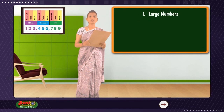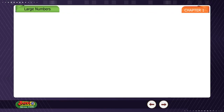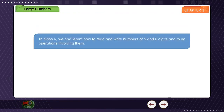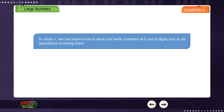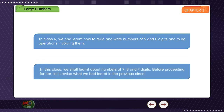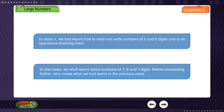In this chapter, you will learn about large numbers. Chapter 1: Large Numbers. In class 4, we had learnt how to read and write numbers of 5 and 6 digits and to do operations involving them. In this class, we shall learn about numbers of 7, 8 and 9 digits. Before proceeding further, let's revise what we had learnt in the previous class.